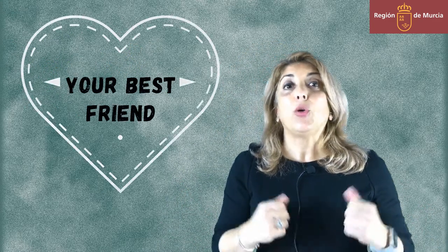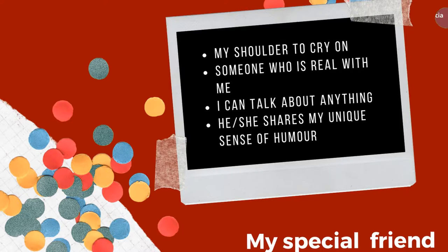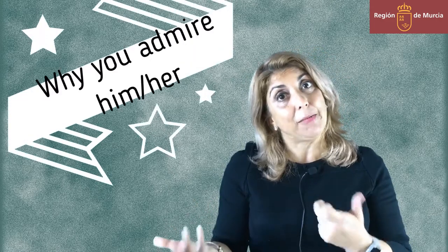Why not start in the introduction by saying: 'Pepe is my best friend because he is a shoulder where I can cry on, or he is the person I share a special sense of humor with.' Or even you can say that he is the person to whom you talk about a special thing. It could be a very good idea to include why you admire him or her.